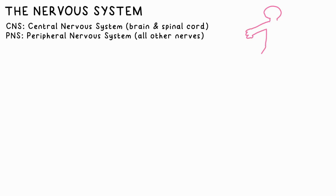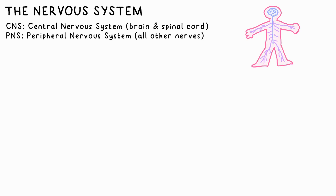One way that our body achieves this is with our nervous system. It consists of the CNS, the central nervous system, which includes the brain and spinal cord, and the PNS, the peripheral nervous system — the nerves that go through the rest of the body.